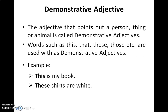Demonstrative adjective. An adjective that points out a person, thing, or animal is called a demonstrative adjective. Words like 'this,' 'that,' 'these,' and 'those' are used as demonstrative adjectives. For example: 'This is my book.' 'These shirts are white.' So 'this' and 'these' are demonstrative adjectives.